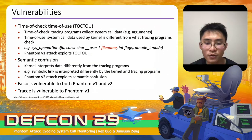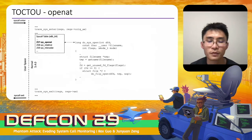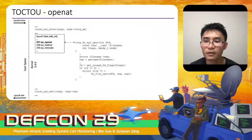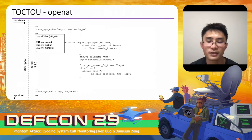We will demonstrate that Falco is vulnerable to both Phantom V1 and V2 attacks, while Tracee is only vulnerable to Phantom V1. To understand TOCTTOU, we use the openat syscall as an example with kernel version 5.4.0. But regardless of kernel version, if monitoring software uses tracepoints in this way, the TOCTTOU vulnerability will exist.